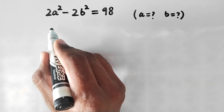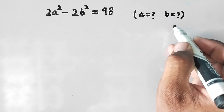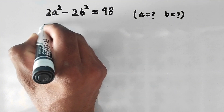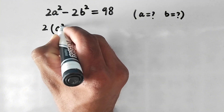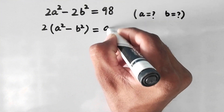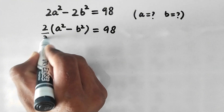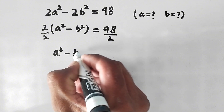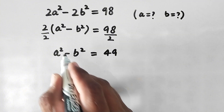Hello everyone, and welcome. We need to solve: 2a² minus 2b² equals 98, and find the values of a and b. From the left-hand side we can take 2 as common, giving 2(a² minus b²) equals 98. Dividing both sides by 2, we get a² minus b² equals 49.